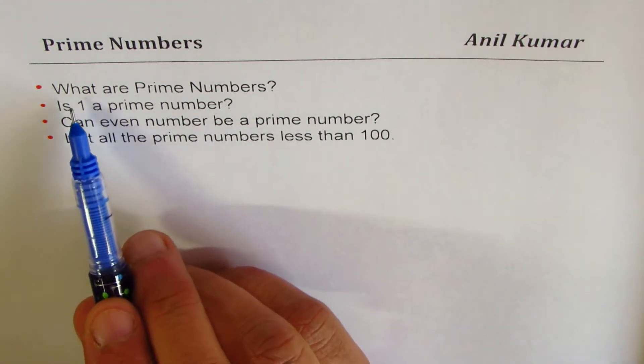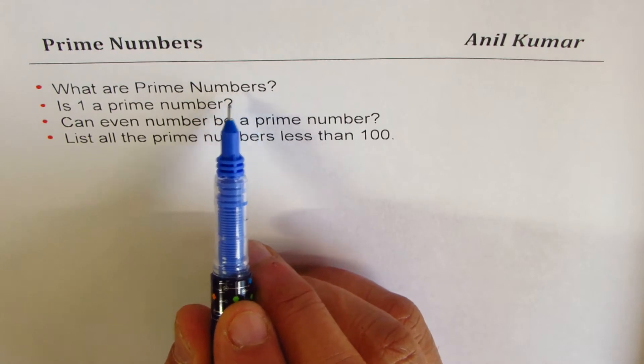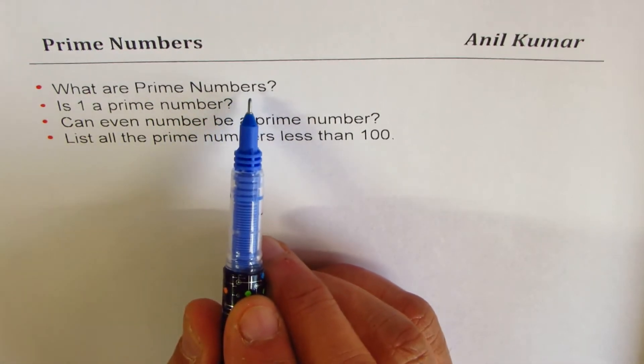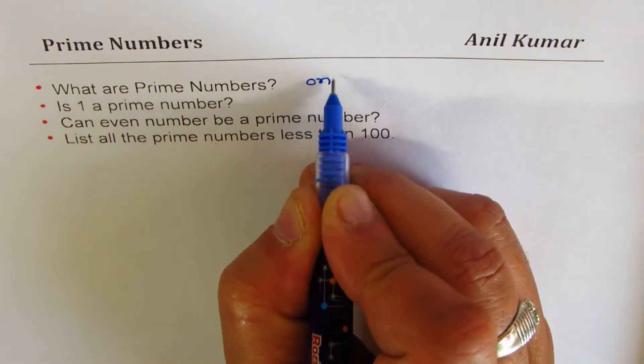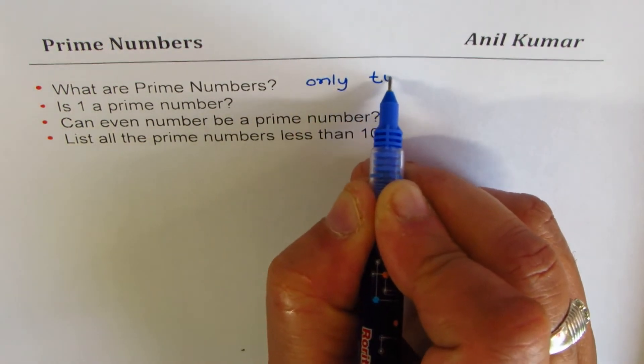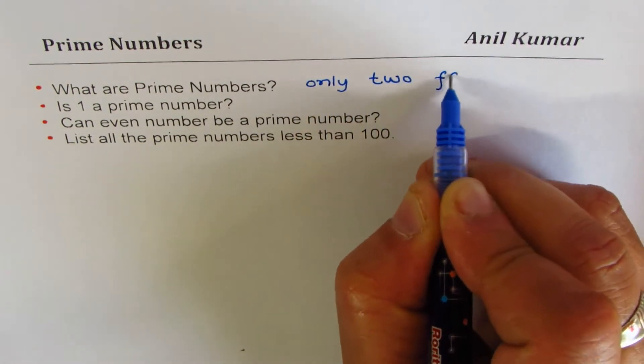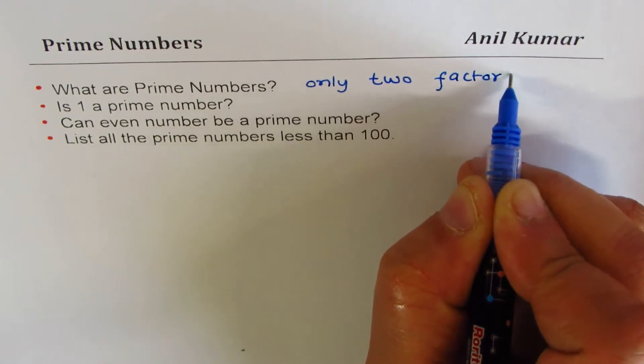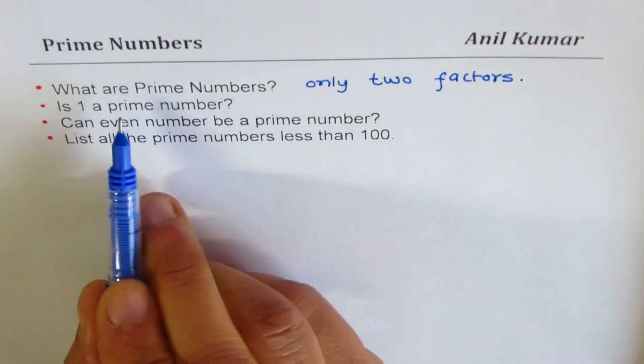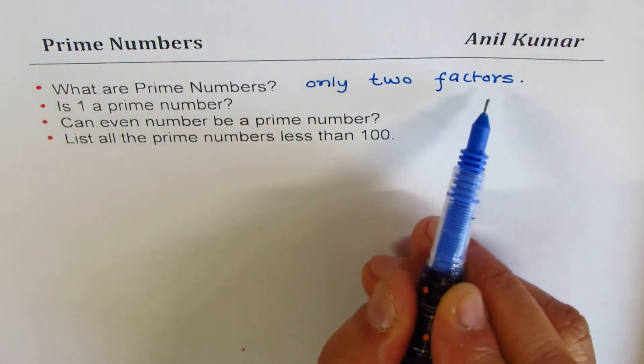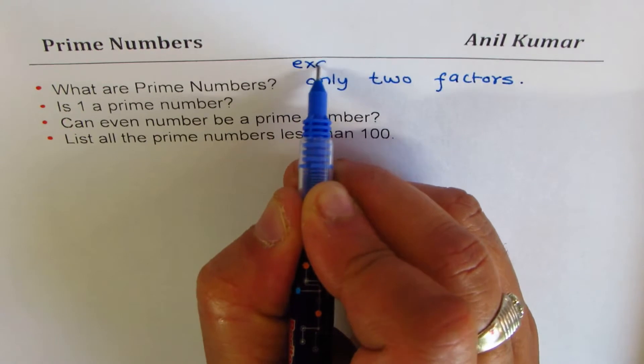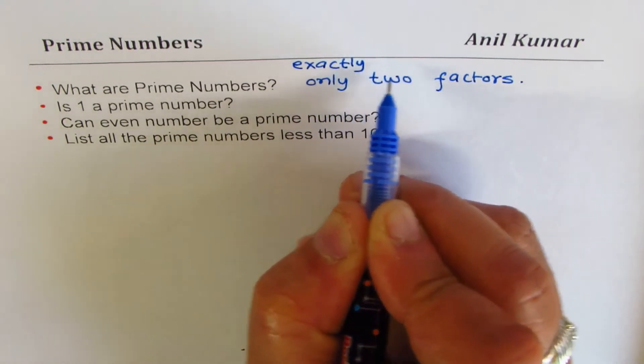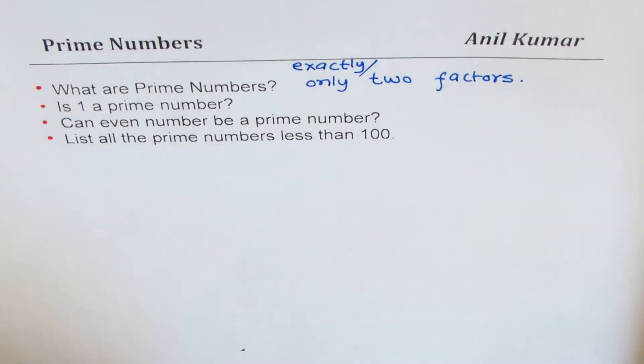Let's begin by defining what prime numbers are. So prime numbers are numbers which have only two factors. Exactly two factors is appropriate.